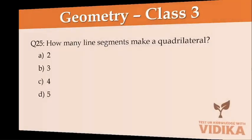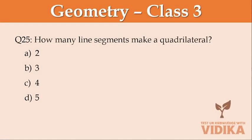How many line segments make a quadrilateral? Option A two, option B three, option C four, option D five.